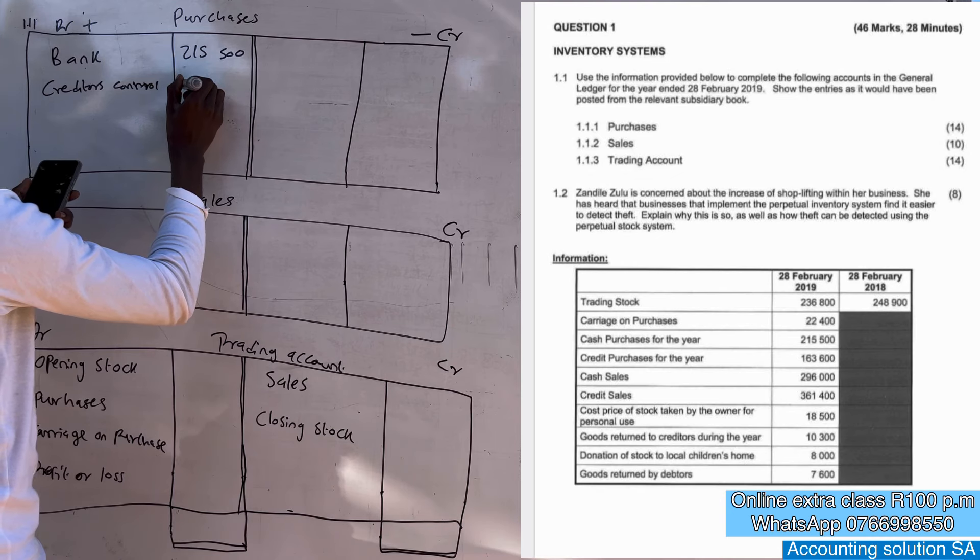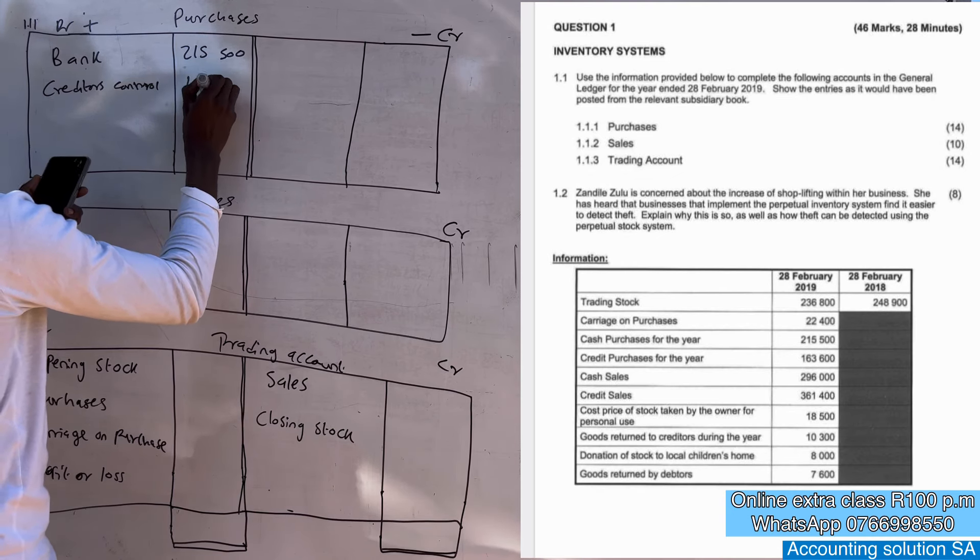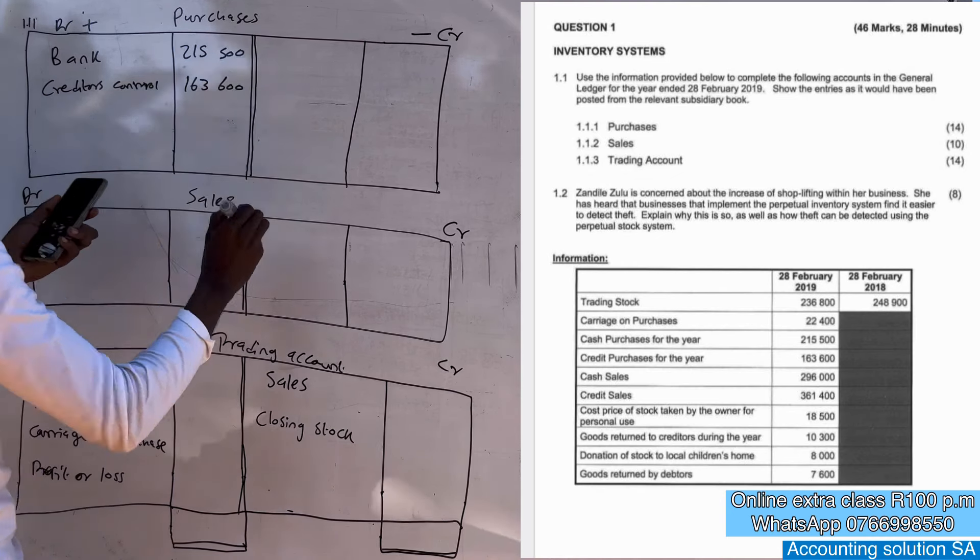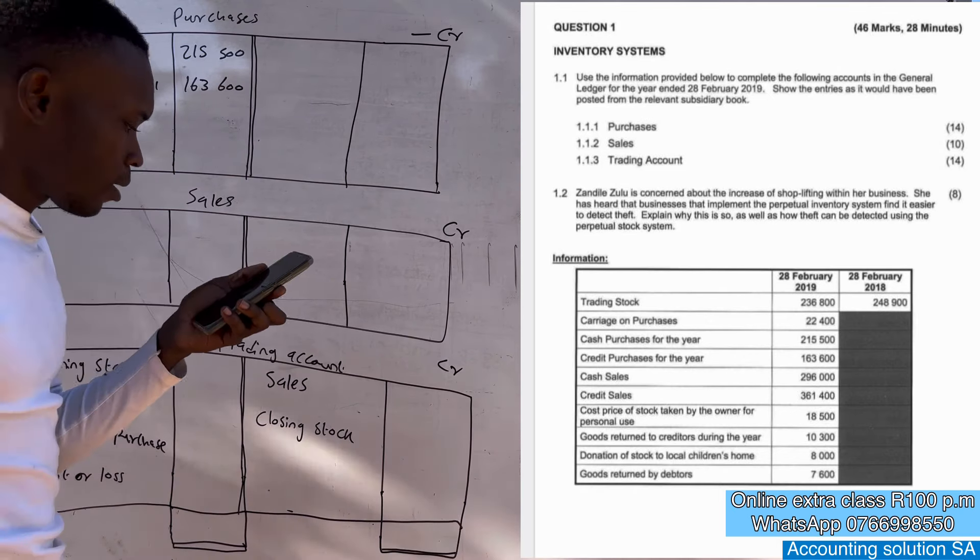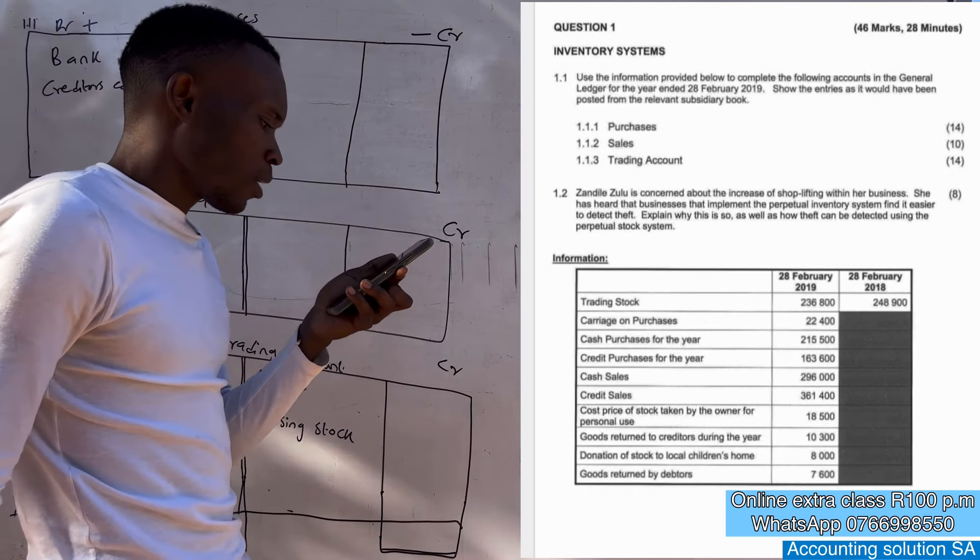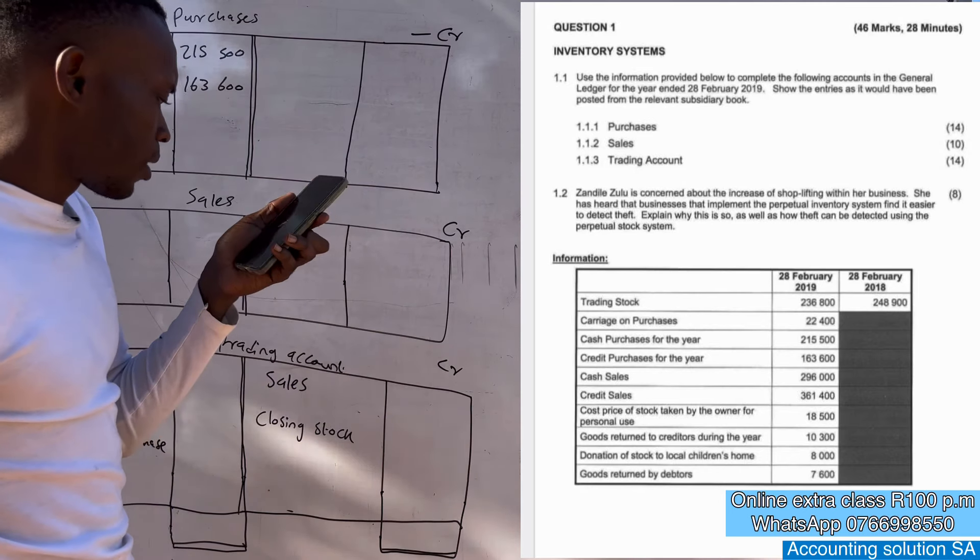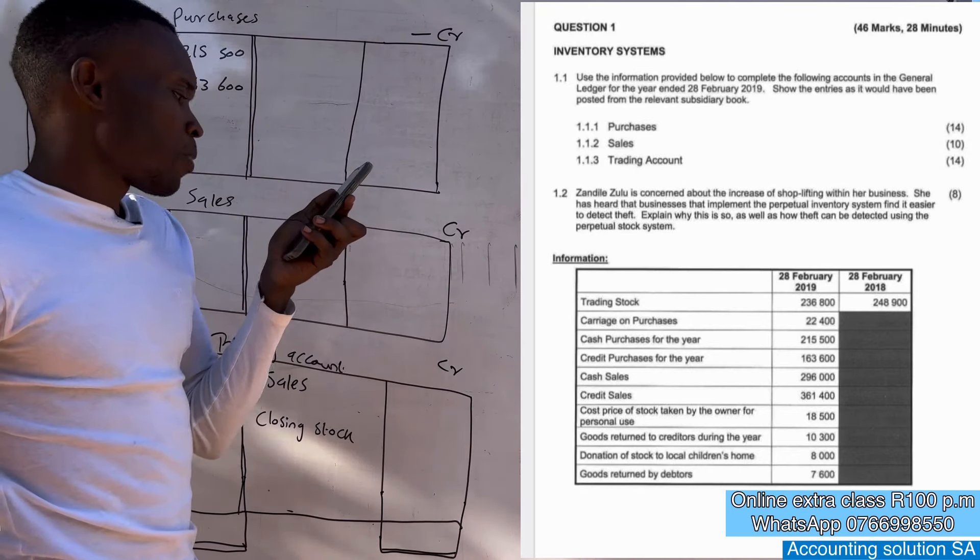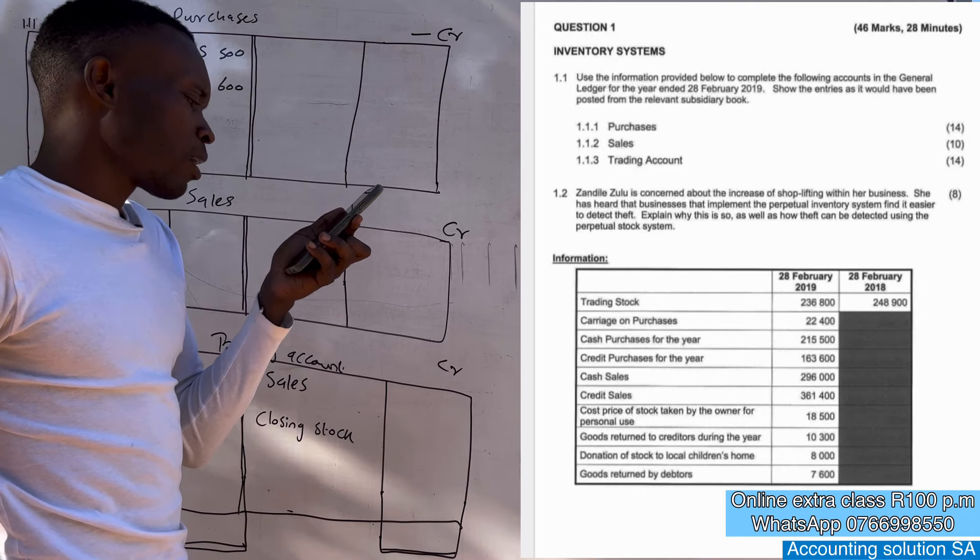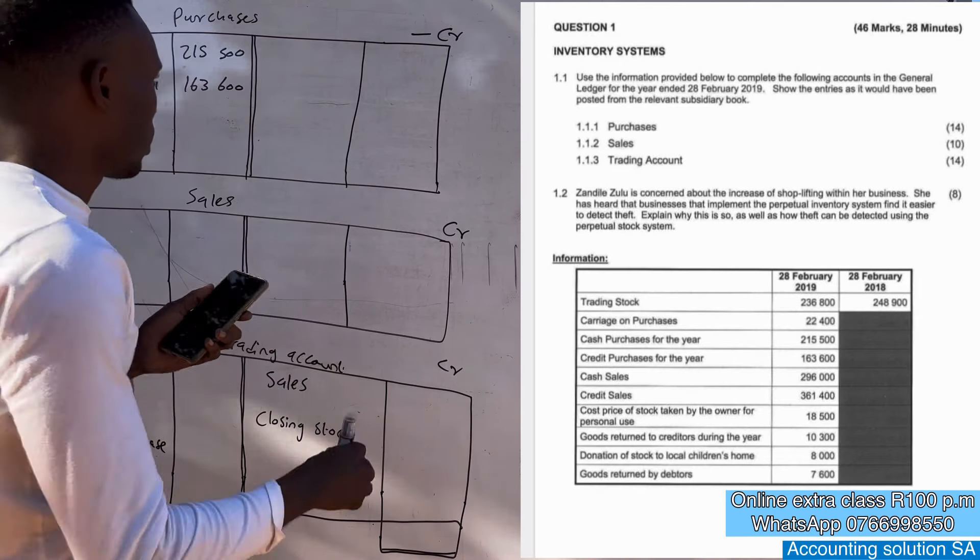Creditors control which is 163,600. And also we have a cash sales which is this one, and credit sales which is this one. Cost price of stock taken by the owner for personal use, that's a drawings. It's decreased, what purchase drawings, it's 18,500.